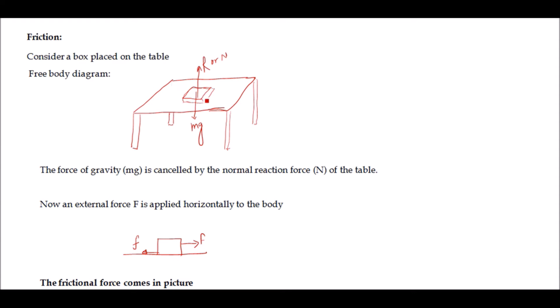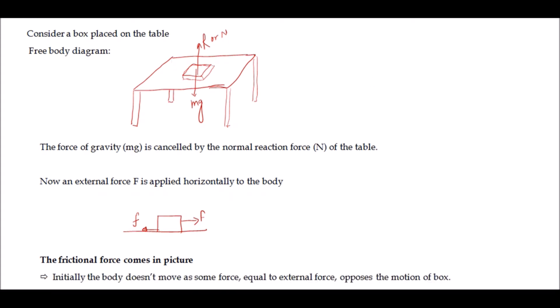As this book is at rest, the table will apply a vertical force — this is the reaction force or the normal force. The force of gravity mg is cancelled by the normal reaction of the table, as shown in the figure. Now if we apply an external horizontal force F on this body, initially this force is small.